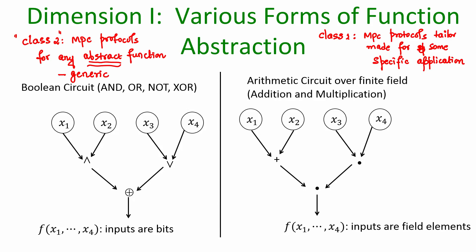When I am designing a generic MPC protocol, I have to follow some representation for the function f, because if I do not know any details about the function f, how can I design a protocol to securely compute it? So I have to do some abstraction — I have to represent my underlying function f in an abstract fashion, and that is what I mean by function abstraction. There are two popular forms of function abstraction used in Class 2 or any generic MPC protocol.